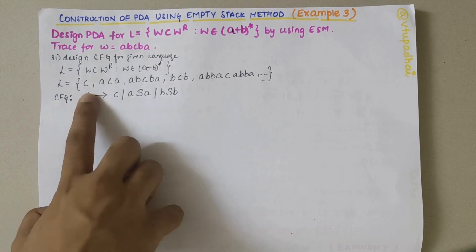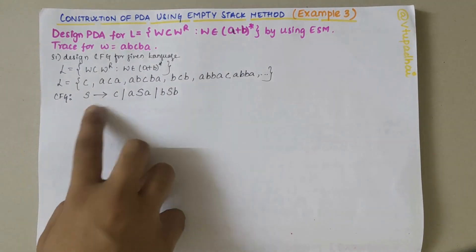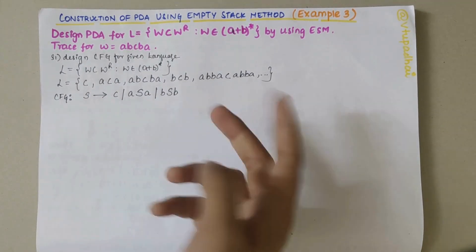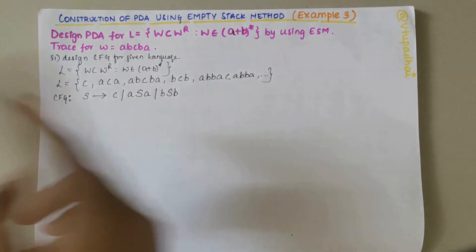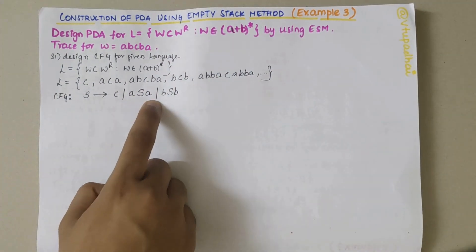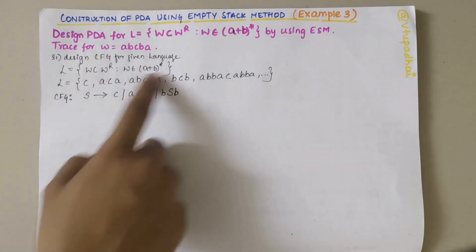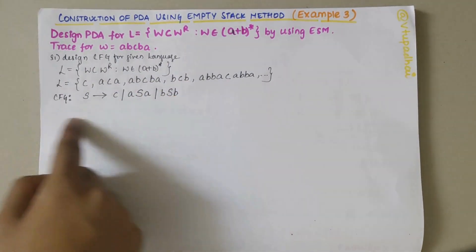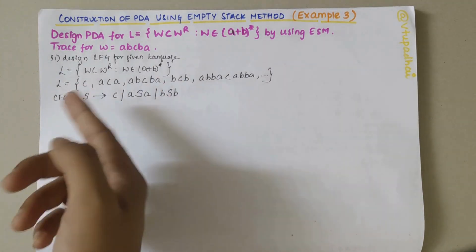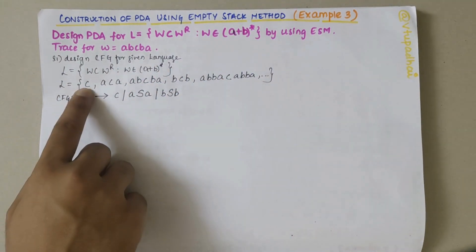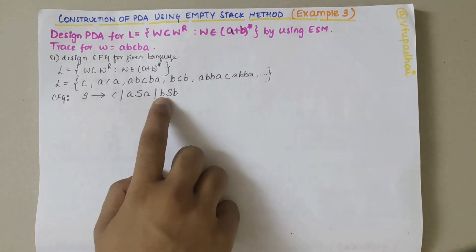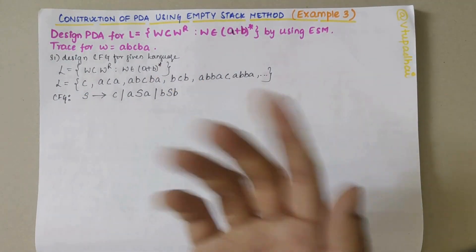S derives C. The context-free grammar can comprise any number of A's and B's, so: S → A S A, because it can recursively be the same. The lambda case is not possible here; C is possible. Also S → B S B. So the CFG productions are: S → C | A S A | B S B.